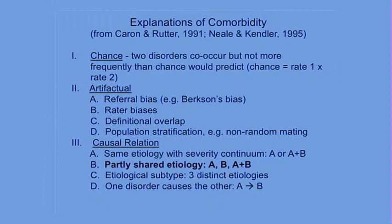This shared etiology explanation turns out, after all this work, to be the most common explanation for the comorbidities we've studied, and it's likely common across many others once you rule out artifacts. We should be looking for etiologic factors that produce risk for more than one disorder. On the environmental side, traumatic stress and poverty are huge risk factors for many things. On the genetic side, candidate genes identified for certain disorders are often implicated in others — some autism genes are turning up in other things, some schizophrenia genes too.